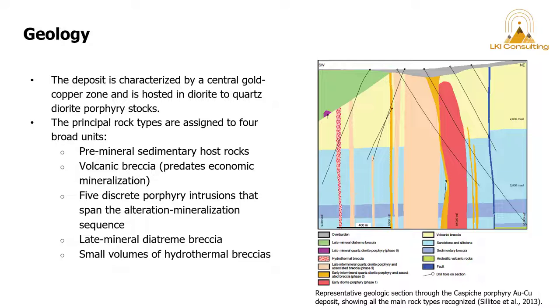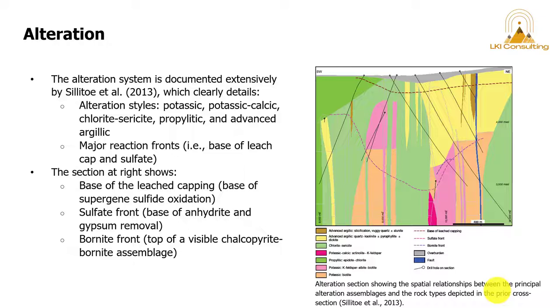The deposit is characterized by a central gold-copper zone and hosted in diorite to quartz diorite porphyry stocks. The observed alteration has particularly aggressive boundaries and geometry, but in general we are looking at potassic, potassic-calcic, chloride-sericite, propylitic, and advanced argillic alteration, as well as two major reaction fronts: the base of the leach cap and sulfate fronts.